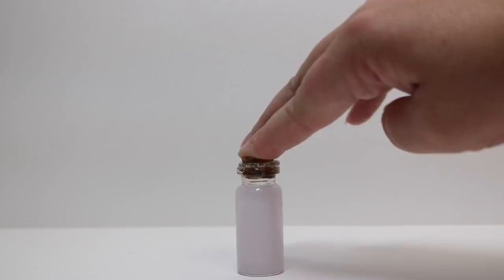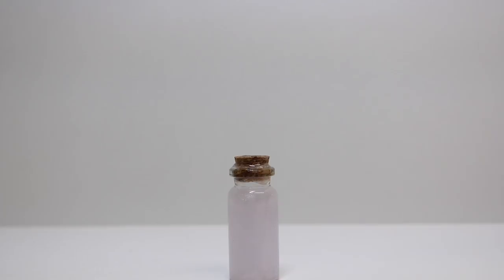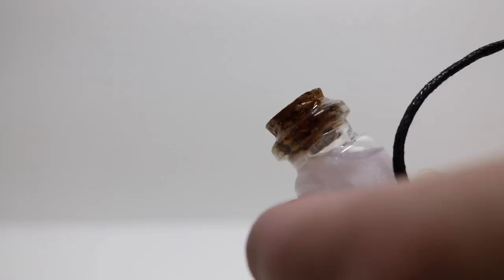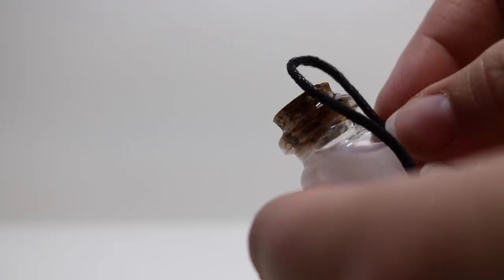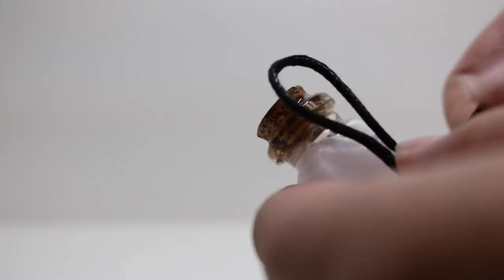Now that our cork is glued on, we are going to take a little bit of our black cording and run it right here at the neck of the bottle. We're going to use the same technique that we've used on several different bottles. We are going to make a loop and then run the string around capturing the loop.